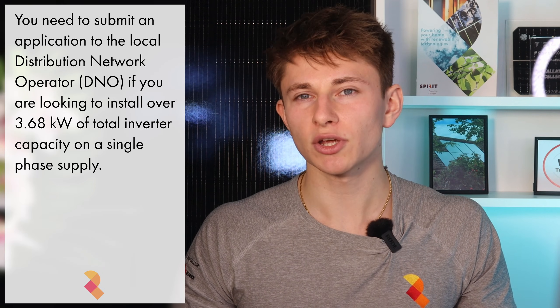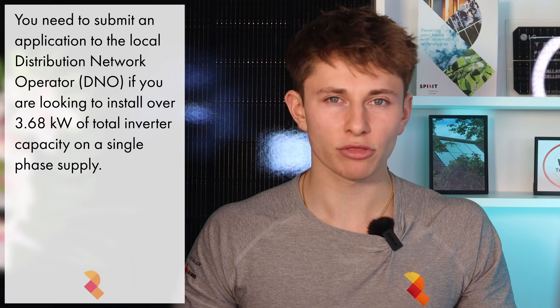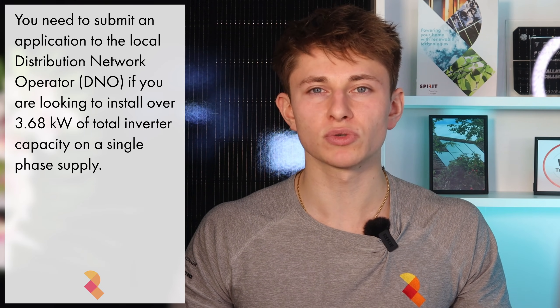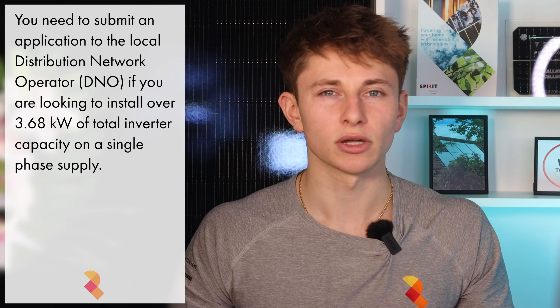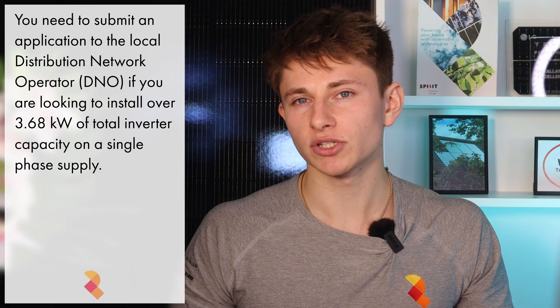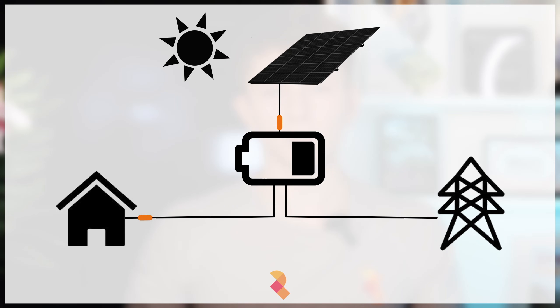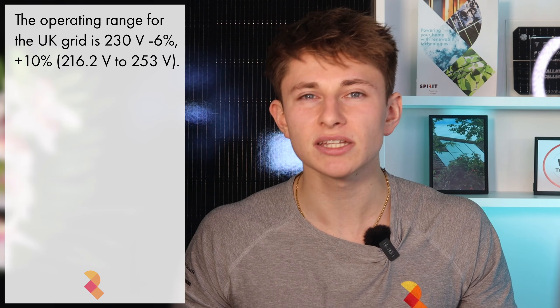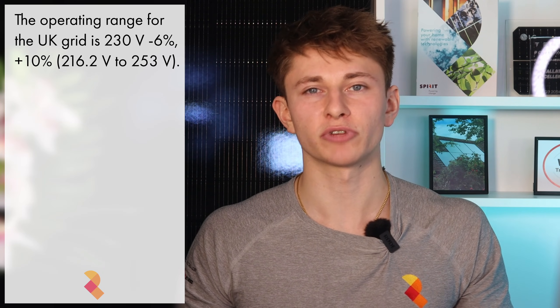So what is a DNO application and why do you need one? If you're looking to install a solar or battery inverter larger than 3.68kW per phase, then your installer will need to apply for permission from your local distribution network operator, or DNO, prior to installation. The reason we need to apply is because the system has the potential to send electricity to the grid, which raises the grid voltage, and the network operators need to ensure that the voltage stays within its operating range.